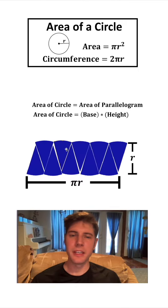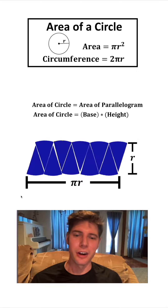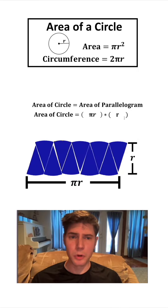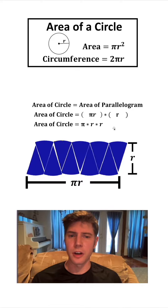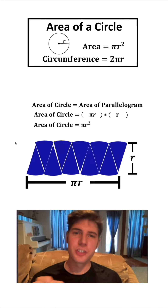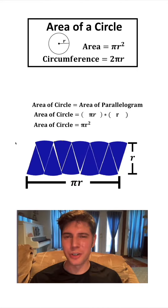So the area of our circle will be equal to base times height. The base is the bottom here, which is pi R. And the height is this R right here. So we want to multiply these together — that's going to be pi times R times R. But R times R is R squared. So the area of the circle is pi R squared, and that's what we were trying to show.